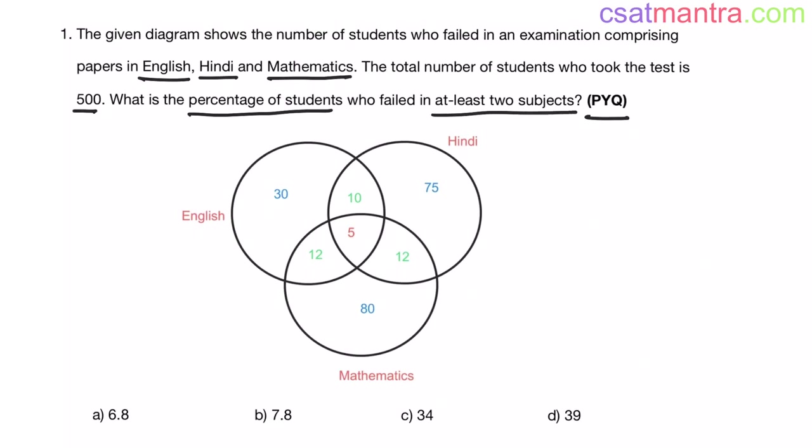First we will find out the students who failed in at least two subjects and then we will calculate the percentage. The number of students who failed in at least two subjects equals the number of students who failed in two subjects or greater than two.